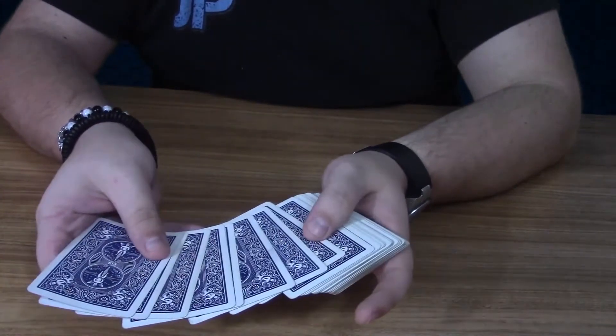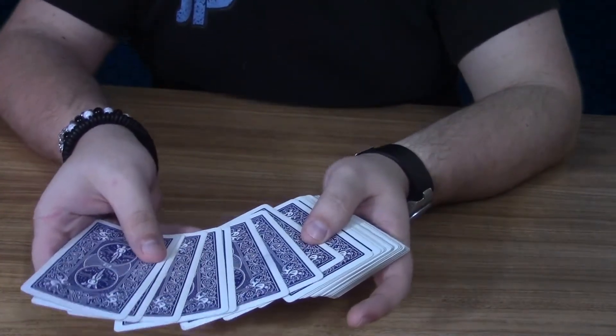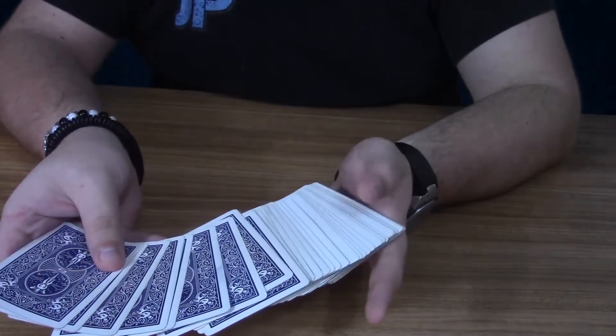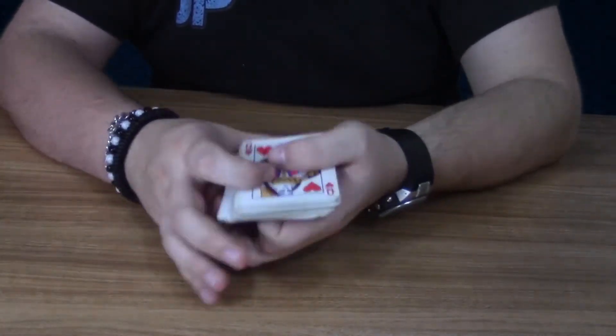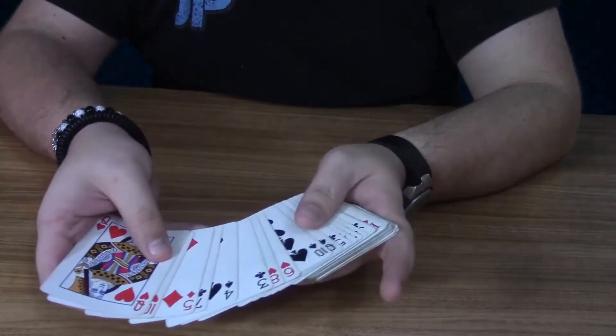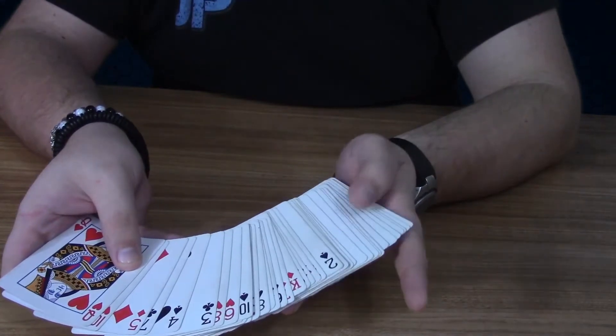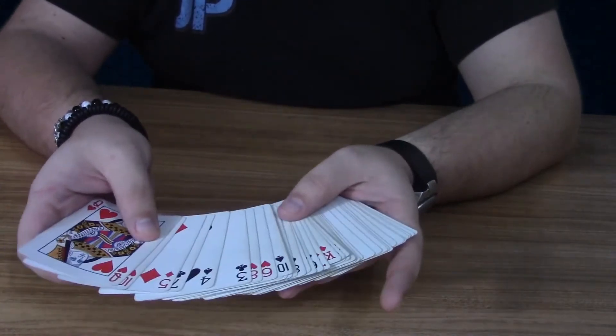Then you spread through so you can show them that they have backs so it looks legit. Don't spread too far over here. And same thing with this side. You can show them a lot of the cards here, but don't spread too far over here because they'll see the blanks over here. So it's really simple.